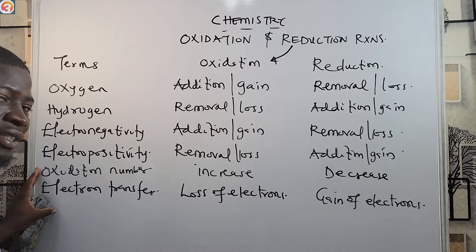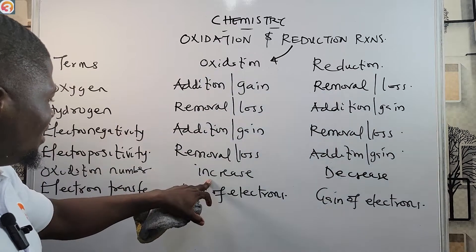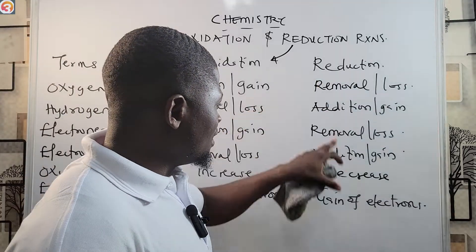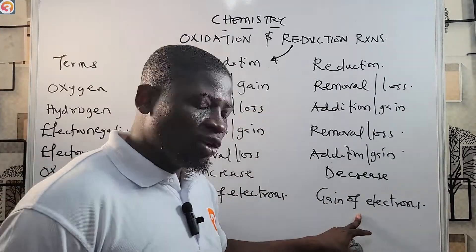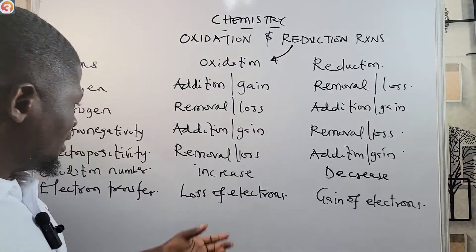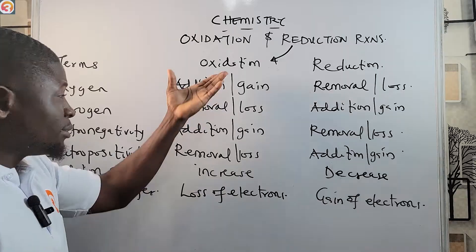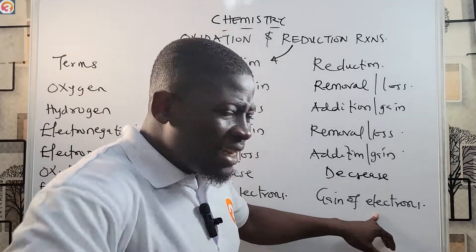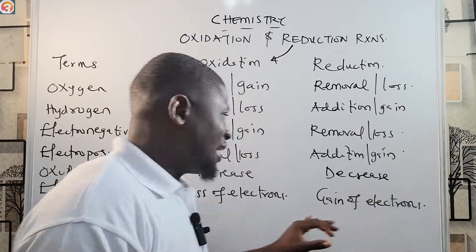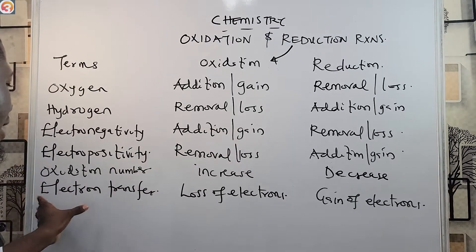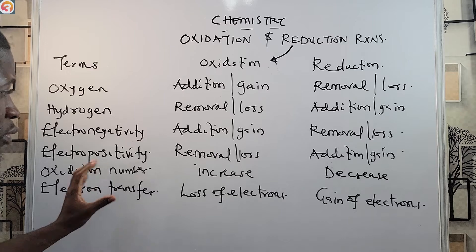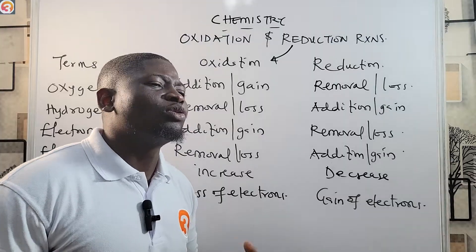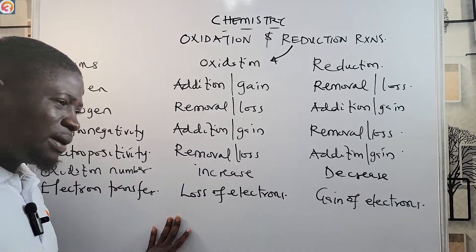From the last two definitions: oxidation is an increase in oxidation number resulting from loss of electrons, while reduction is a decrease in oxidation number resulting from gain of electrons. When an atom loses electrons, the oxidation number increases. When an atom gains electrons, the oxidation number decreases. This definition in terms of oxidation number and electron transfer is one of the most used in calculating redox reactions, so it is very important you understand this well.